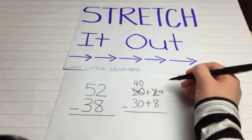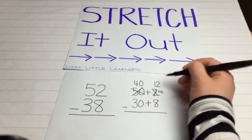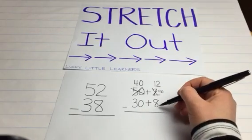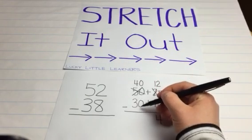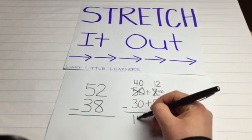So if we add 2 plus 10, that gives us 12. Now can we go 12 minus 8? Yes. 40 minus 30, 10.